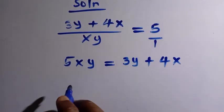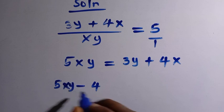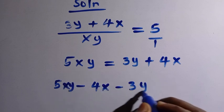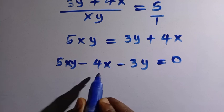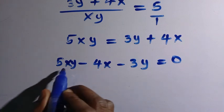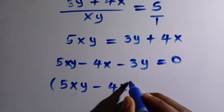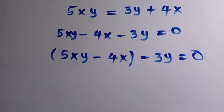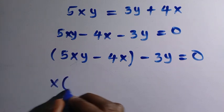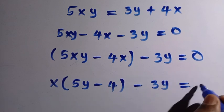By collecting all terms, we have 5xy minus 4x minus 3y equals 0. What is common here is x, so by factoring out x we have x(5y minus 4) minus 3y equals 0.